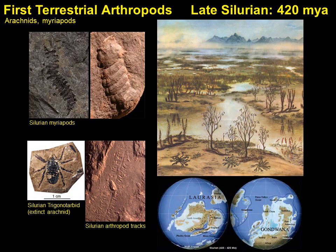The first evidence of arthropods colonizing the land appears during the Silurian, about 420 million years ago. Plants had already started to colonize the land during the Ordovician about 455 million years ago, but Silurian deposits indicate the first land plant mega-fossils from swampy or marshy habitats. The earliest arthropods on land included predatory trigonotarbids and scorpions — both arachnids — and non-predatory millipedes. Fossilized arthropod tracts from this period contribute evidence of early terrestrial life.